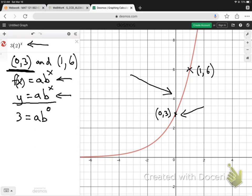Now from that, anything to the power 0 is 1. So can you see that a equals 3? So I already have some information right there. Now, how do we find b? Well, we use the second point, (1,6).